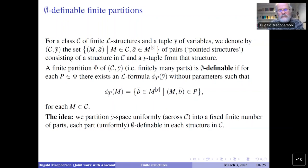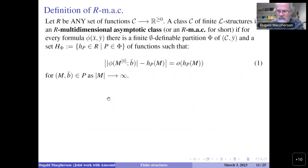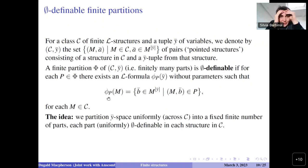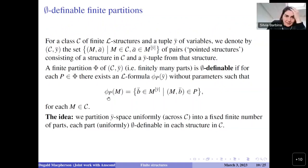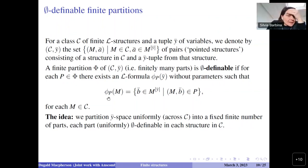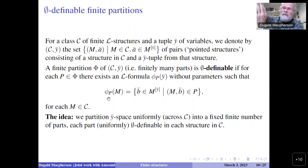A clarifying question: in C_y, the same structure can appear with different parameters — you can have pairs (M, a-bar) and (M, b-bar) for different parameter tuples. That's the point: both the structure varies in the class and the parameters vary within each structure. The formula defines the parts uniformly across all structures in the class.